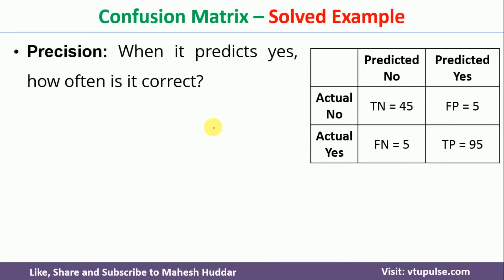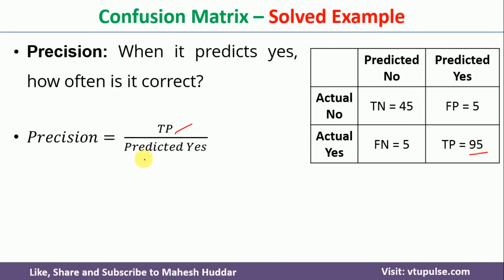The next performance metric is precision. This is when it predicted as yes, how often it is correct. In this case, 95 times examples were classified as yes — how often is it correct? That is TP divided by total predicted yes, which is 95 divided by 100, giving 95% precision.